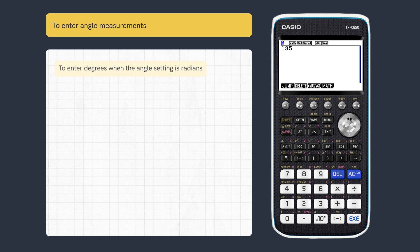To override the current angle setting and enter degrees, press Option, Further Menu, Angle and then Degree. Press Execute to convert this to radians, and S to D for the decimal approximation.